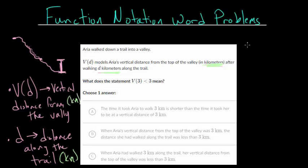So looking at the question, the first thing we need to understand is what is V(3)? So notice V(D) is the vertical distance from the valley after walking some amount of kilometers, because the D value is the amount of kilometers that she's walked. So notice that the inside, the D value is replaced by 3. So they're telling us that D is 3 here. And when D is 3, that just means that she's walked along the trail a distance of 3 kilometers.